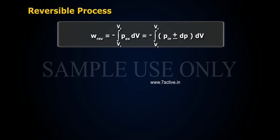Work done under reversible condition equals to minus of integral VI to VF into PEX into DV that equals to minus of integral VI to VF into initial pressure plus or minus pressure change into VF.